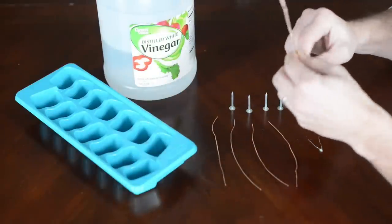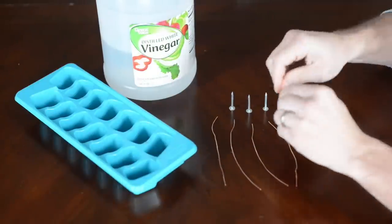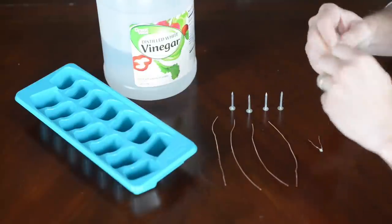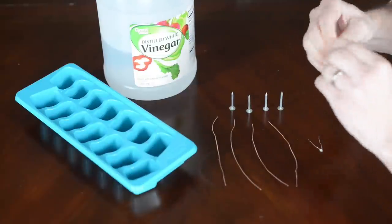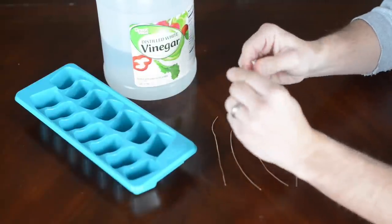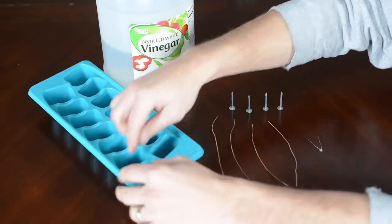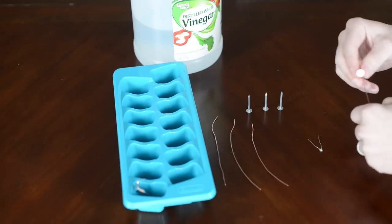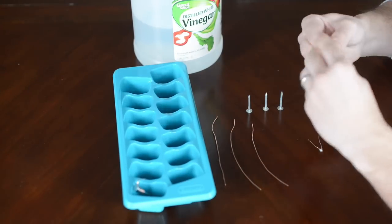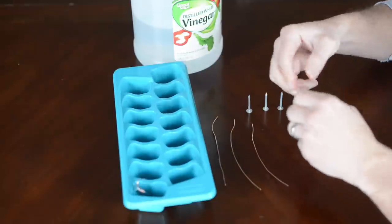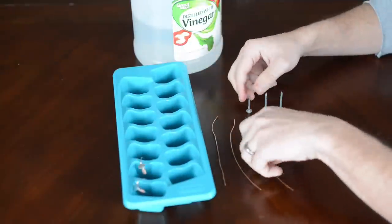Then you're going to take your copper wire and wrap it around your nail. And you want to leave kind of a tail, a little bit of copper wire out. And when you put it in the ice cube tray you want that little tail end of the copper wire to go into the next well of the ice cube tray, into the next little ice cube piece.